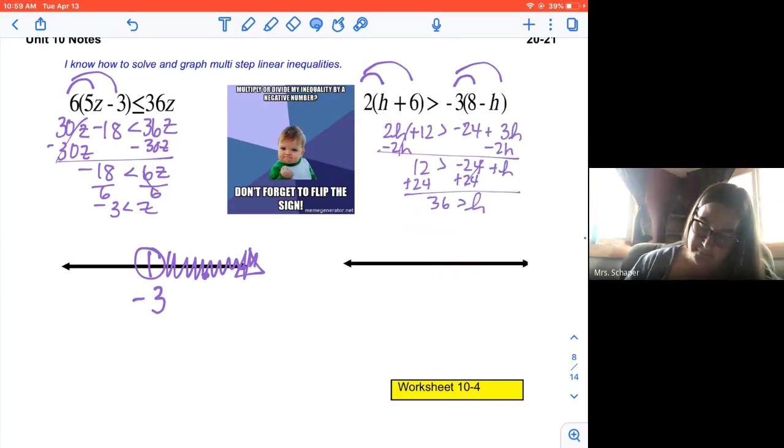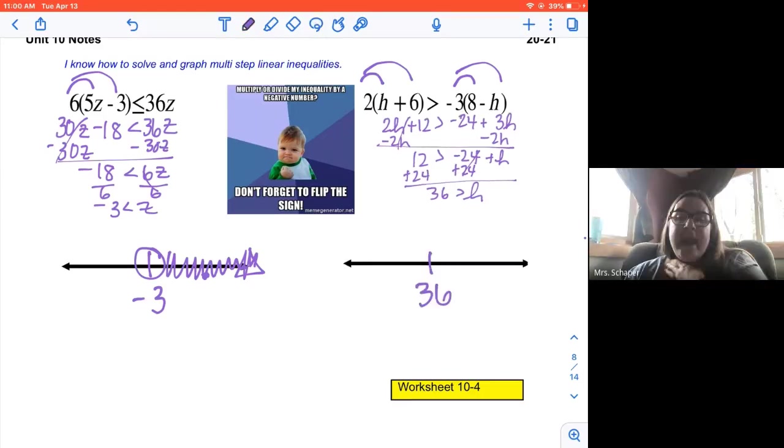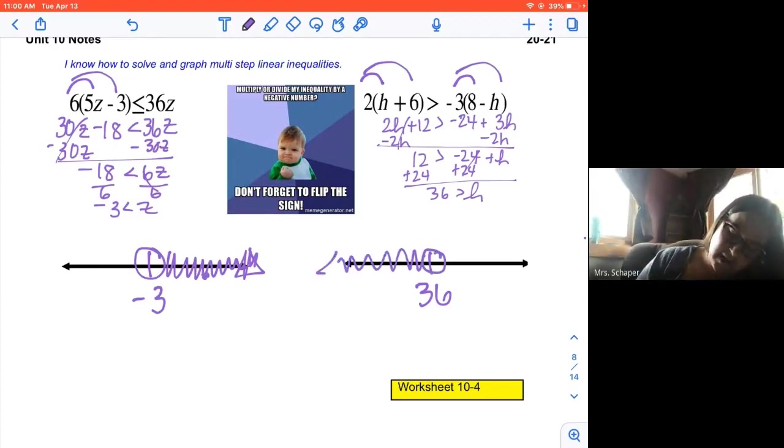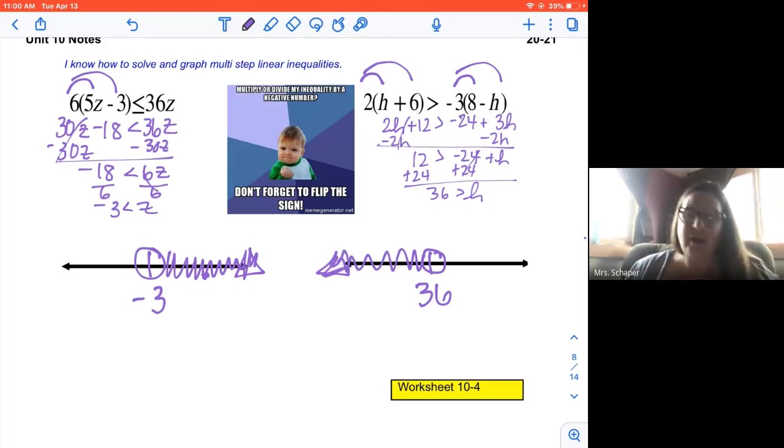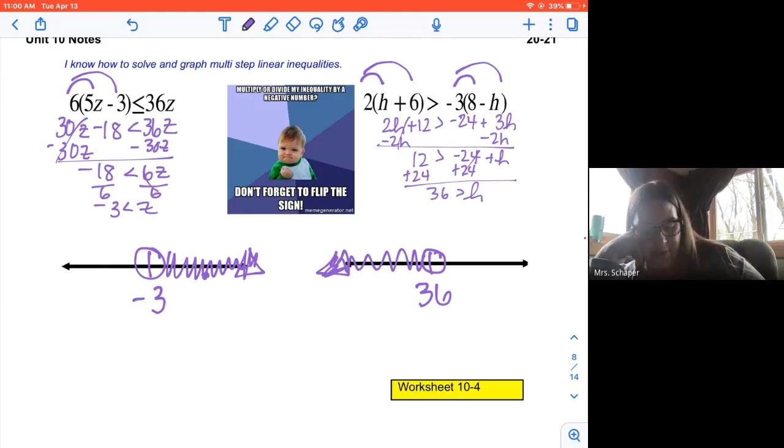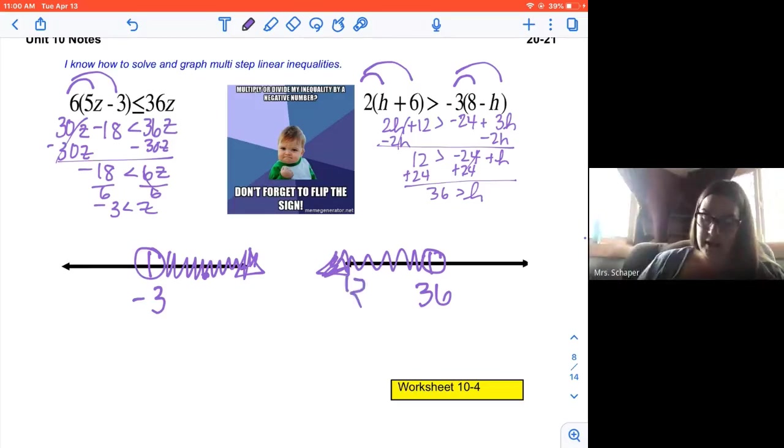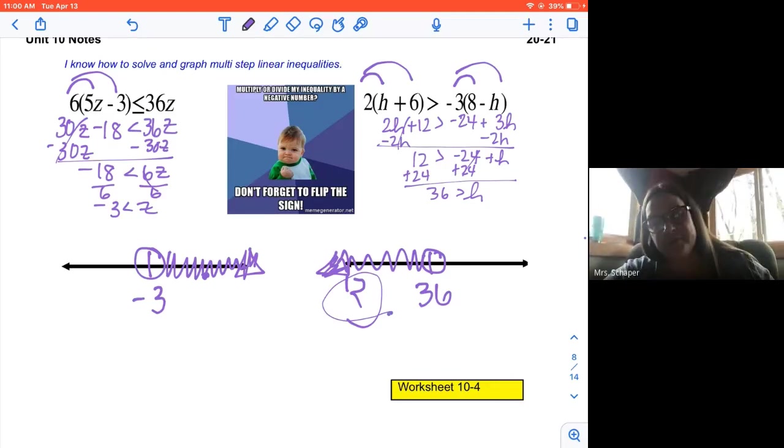Here we go. 36 right here. H is less than 36. 36 is more than H. Open dot. Shade to the left. How do you know, Ms. Shepard? How do you know where to shade? 36 is more than a number. I'm going to say my number is 12 because 36 is more than that. Here's where 12 is on the number line. That tells me how to shade.